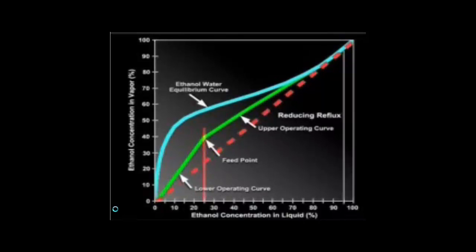Another important concept in distillation columns is reflux. Reflux is the amount of distillate returned to the top of the column as a liquid. If there was no reflux, the top of the column would contain only vapor and multiple stages would not be possible. Reflux is required in order for the fractionation column to operate.